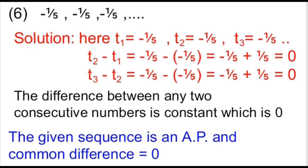Now let us move to the sixth example. The sequence is -1/5, -1/5, -1/5 and -1/5 — a constant sequence. Here T1, T2 and T3 are all equal to -1/5. So T2 minus T1 is -1/5 minus (-1/5), which equals 0. Similarly T3 minus T2 is also 0. The difference between any two consecutive terms is constant at 0, satisfying the AP condition. Hence this sequence is an AP with common difference D equal to 0.